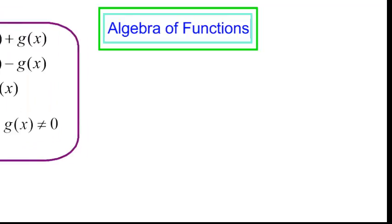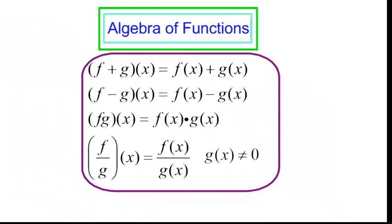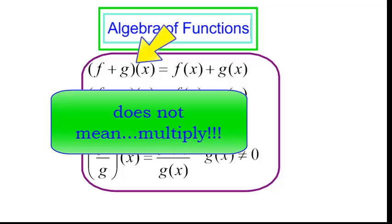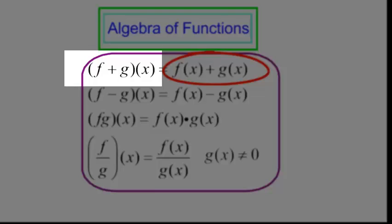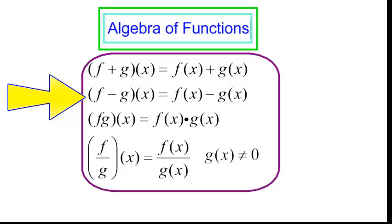Let's talk about the algebra of functions. That's just add, subtract, multiply, and divide. As you can see here, these are all the notations. (f+g)(x) means f(x) plus g(x). It does not mean add f plus g, then multiply by x. (f-g)(x) means f(x) minus g(x). (f·g)(x) means f(x) times g(x). And (f/g)(x) is f(x) divided by g(x), where g(x) does not equal zero. This is our algebra of functions: adding, subtracting, multiplying, and dividing. These are just combinations.